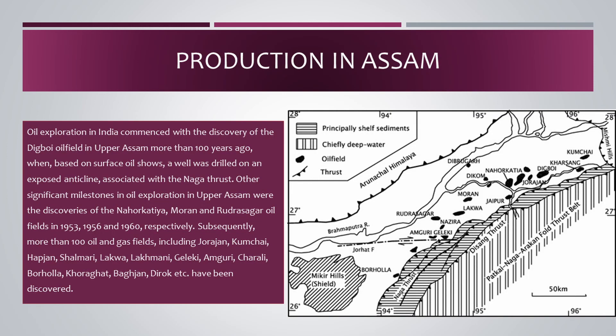Next we are going to know about production in detail. Oil exploration in India commenced with the discovery of the Digboy oil field in Upper Assam more than 100 years ago, when, based on surface oil shows, a well was drilled on an exposed anticline associated with the Naga thrust. Other significant milestones in oil exploration in Upper Assam were the discoveries of the Nahorkatia, Maran, and Rudrasagar oil fields in 1953, 1956, and 1960, respectively.